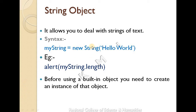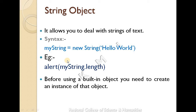To create a string object, you write: myString = new String('Hello World'). This creates a new instance of the string object with the value 'Hello World'. A new string object is defined and assigned.